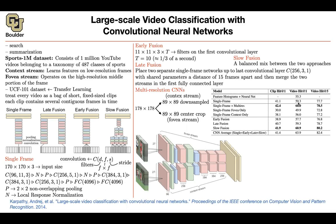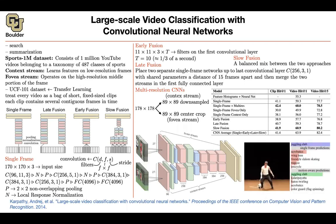Among early fusion, late fusion, and slow fusion, slow fusion performs best. For clip-level prediction, single frame multi-resolution does best, but for the entire video, slow fusion wins. Why does time matter? Consider a video whose true class is 'juggling club' — single frame predictions give wrong labels like acrobatic or recycle. But when you include the video and make it motion-aware by including time, it's able to classify correctly.